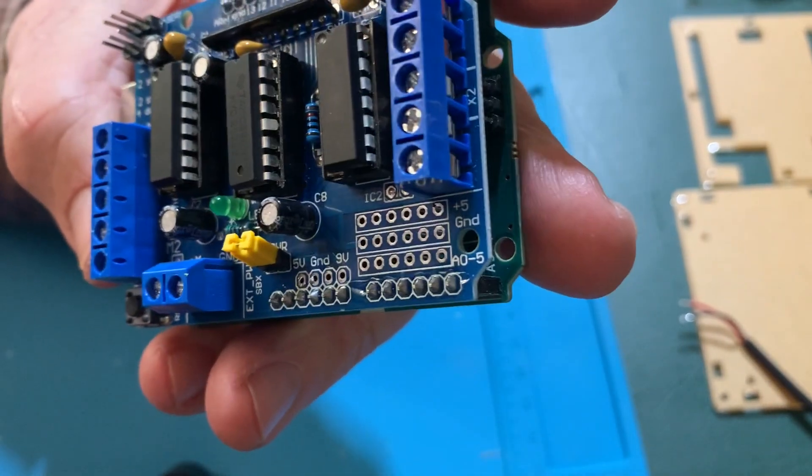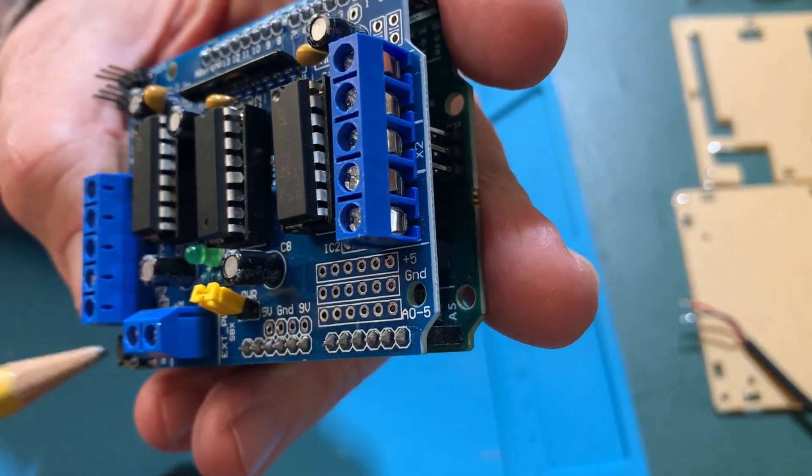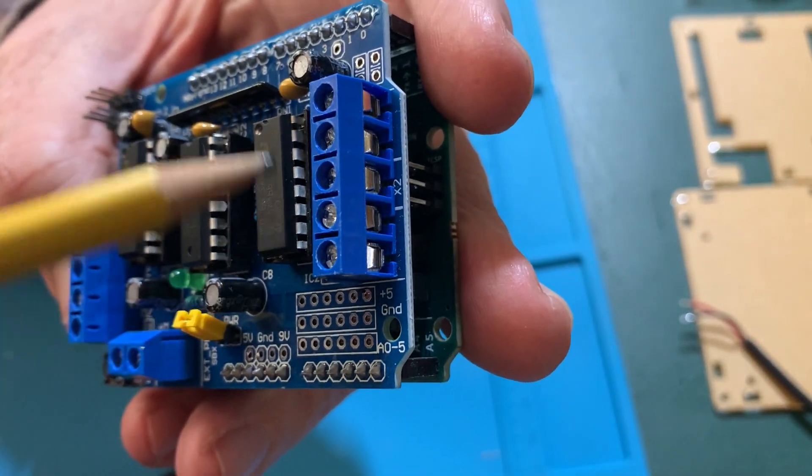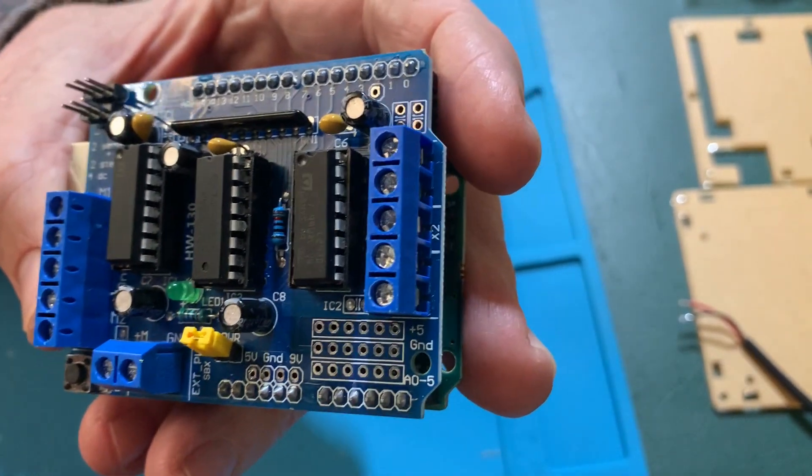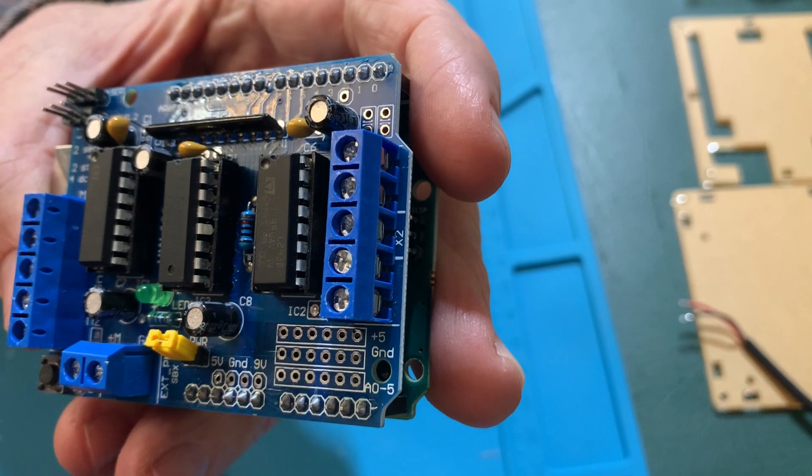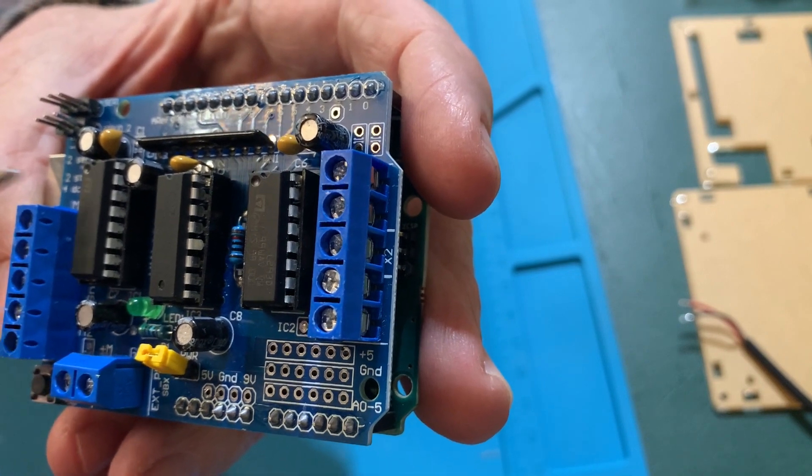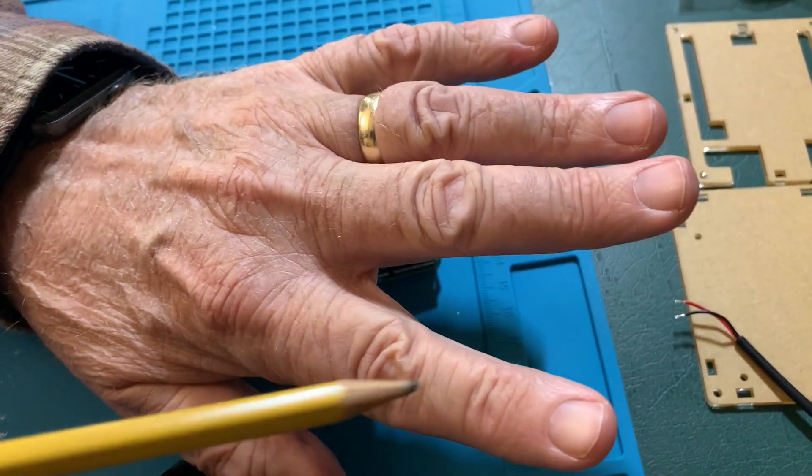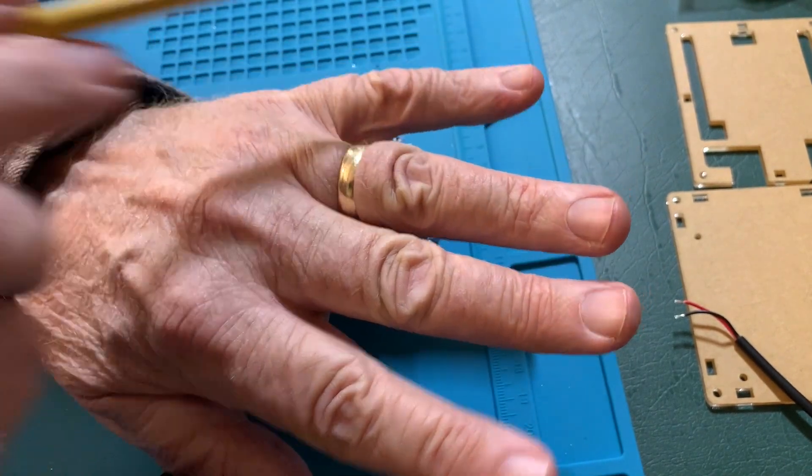So now you have an Arduino Uno with a motor shield. It's a bit hard to see, but there is motor one, motor two, motor three, and motor four on the device. And those will correspond to fingers one, two, three, and four.